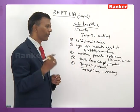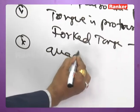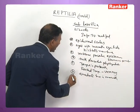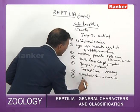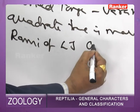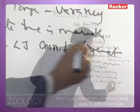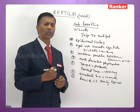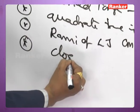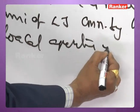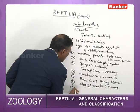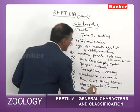A forked tongue is present in Varanus. The quadrate bone is movable in lizards. The two rami of the lower jaw are connected by a ligament so they can be pushed wide apart while swallowing large prey. The cloacal aperture is transverse, and a bifid penis (hemipenis) is present.